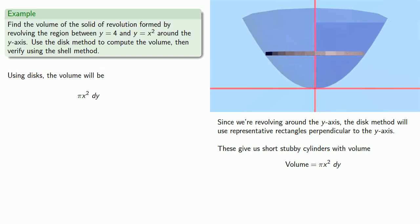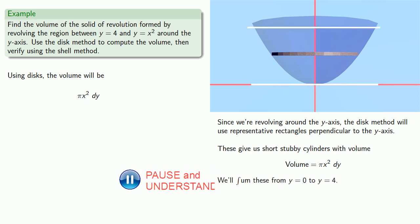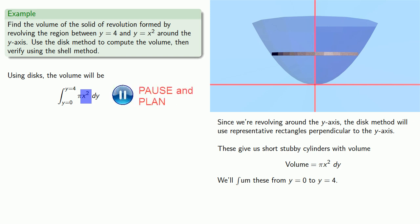And we'll want to sum these, and we might go from our lowest value has y equals 0, to our highest value, y equals 4. Because our differential variable is y, we need to make sure that everything is expressed in terms of y, which means I'll have to do something with this x squared.